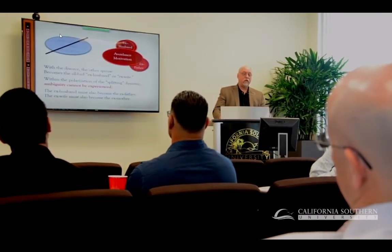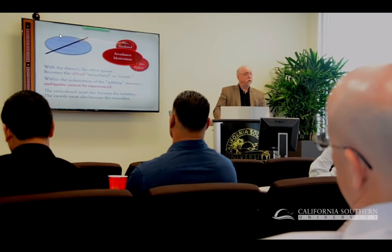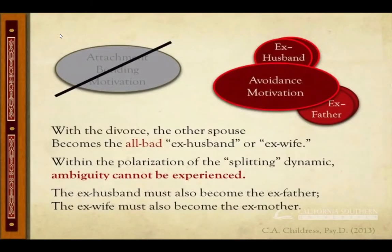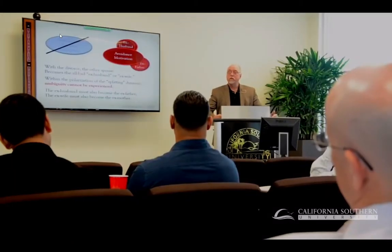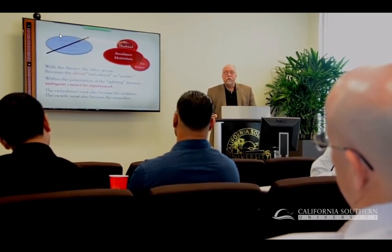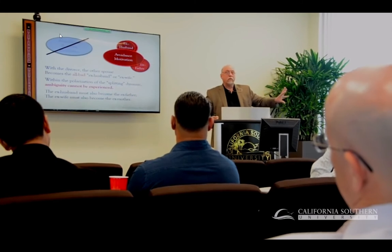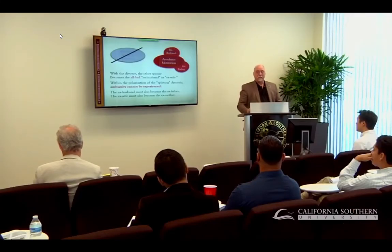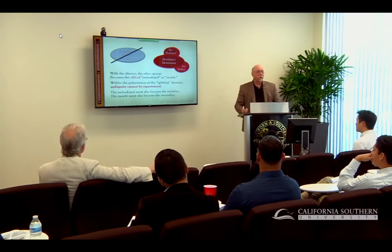The implication of splitting in a divorce with a narcissistic borderline parent is that they are unable to maintain the ambiguity of relationships. The ex-husband must become the ex-father; the ex-wife must become the ex-mother. They simply cannot experience the thought: 'I don't like you as a spouse, but the child can like you as a parent.' That is not capable for their neurological structure.